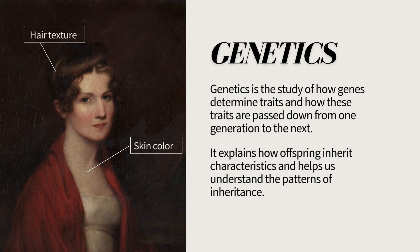So, what is the science of genetics? Genetics is the branch of biology that studies how traits — like eye color, height, or even the ability to taste certain flavors — are passed from parents to their offspring. But genetics is more than just what you inherit. It's about understanding how these traits are passed on. Why do some traits skip a generation? Why do siblings look alike but never exactly the same? That's where genetics comes in.